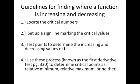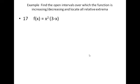So these are the guidelines — look through them. We're going to do this every single time to make predictions about our original function. For an example — number 17 in your book — find the open intervals over which the function is increasing or decreasing, and then locate all relative extrema. Before going into those four steps, the first being finding the critical values, I'm going to distribute that x squared to avoid using the product rule. So now I'm going to find the critical values — this was step one.